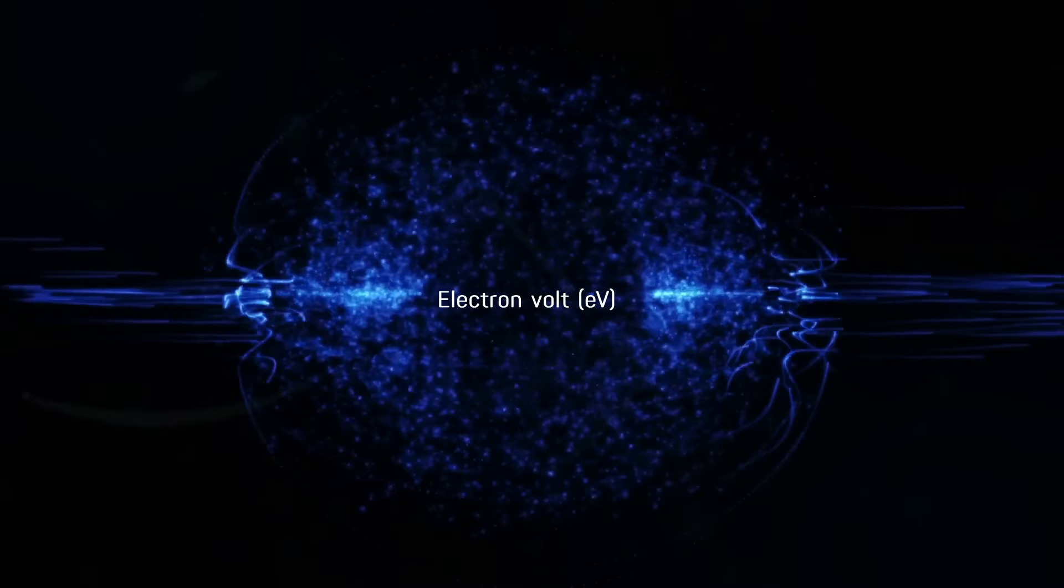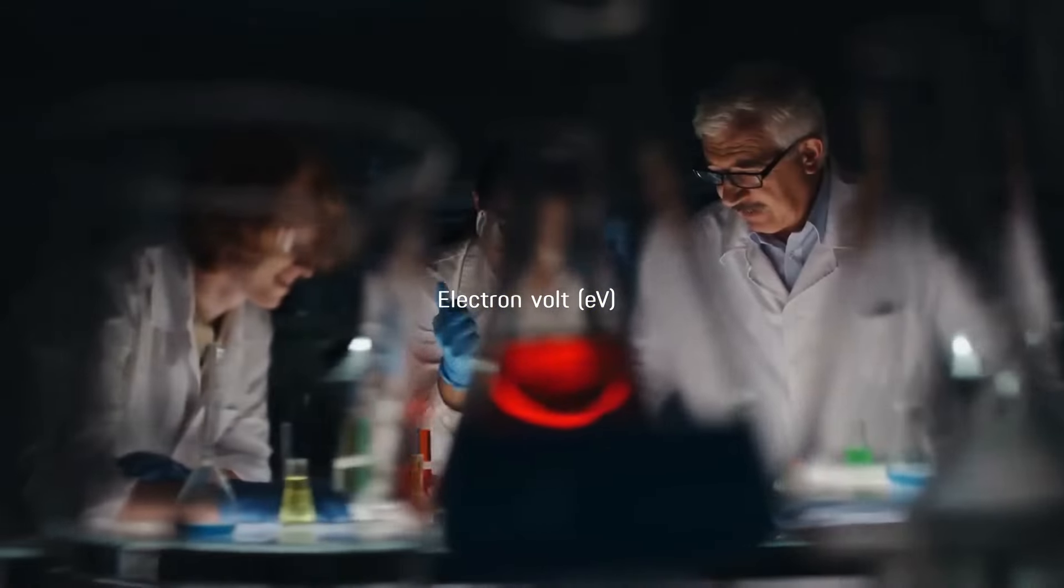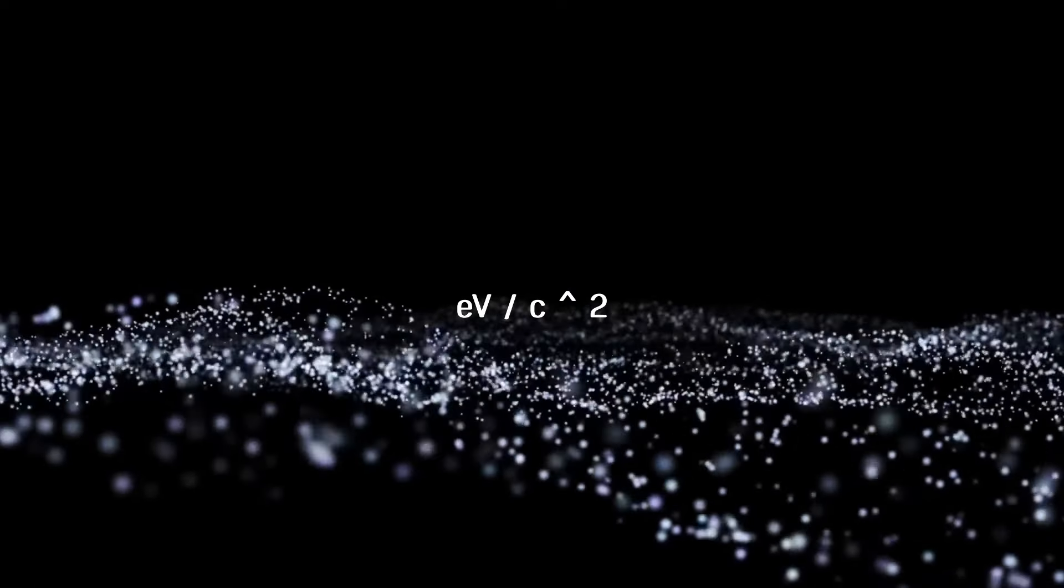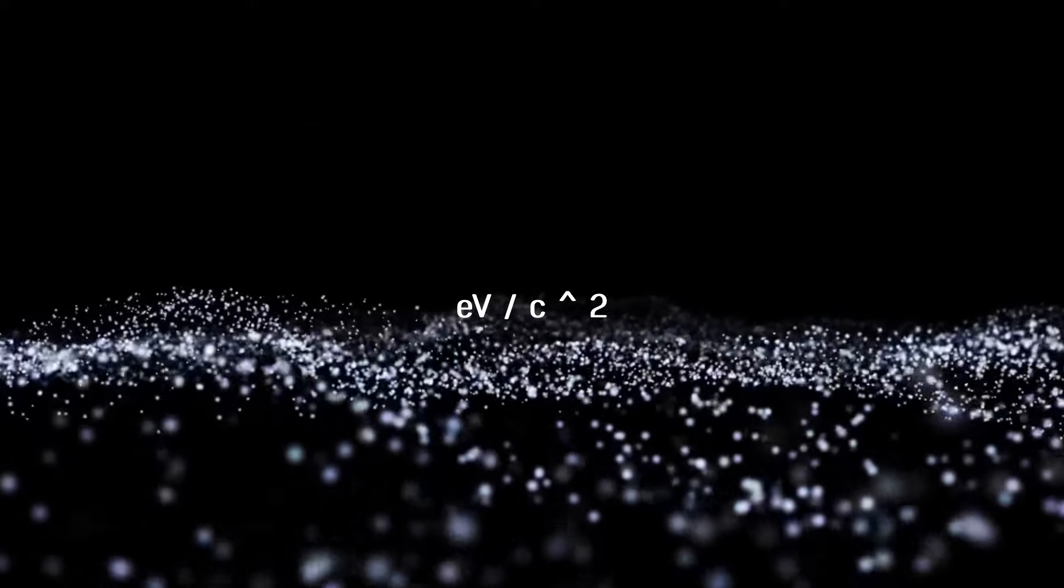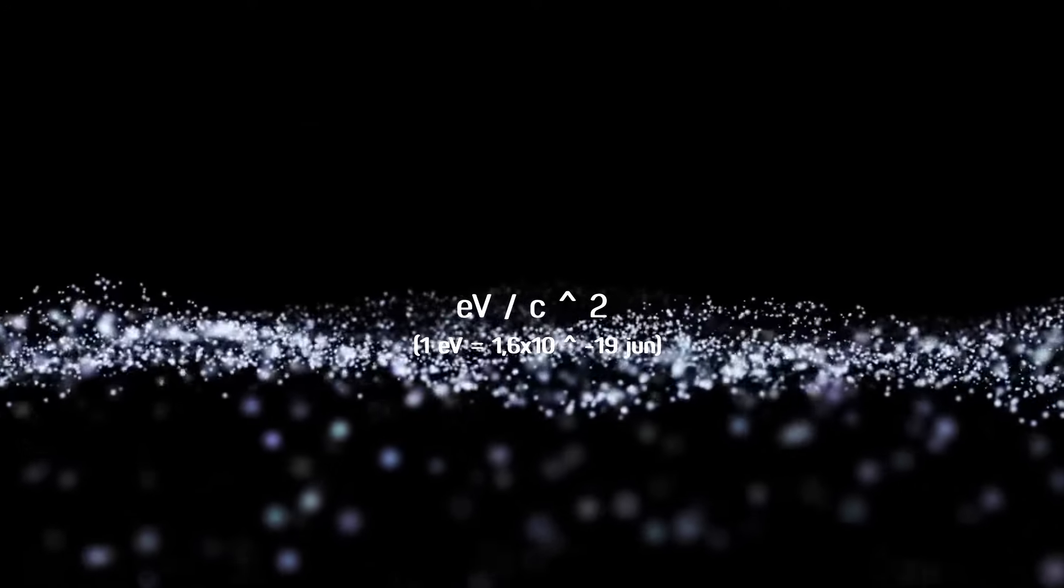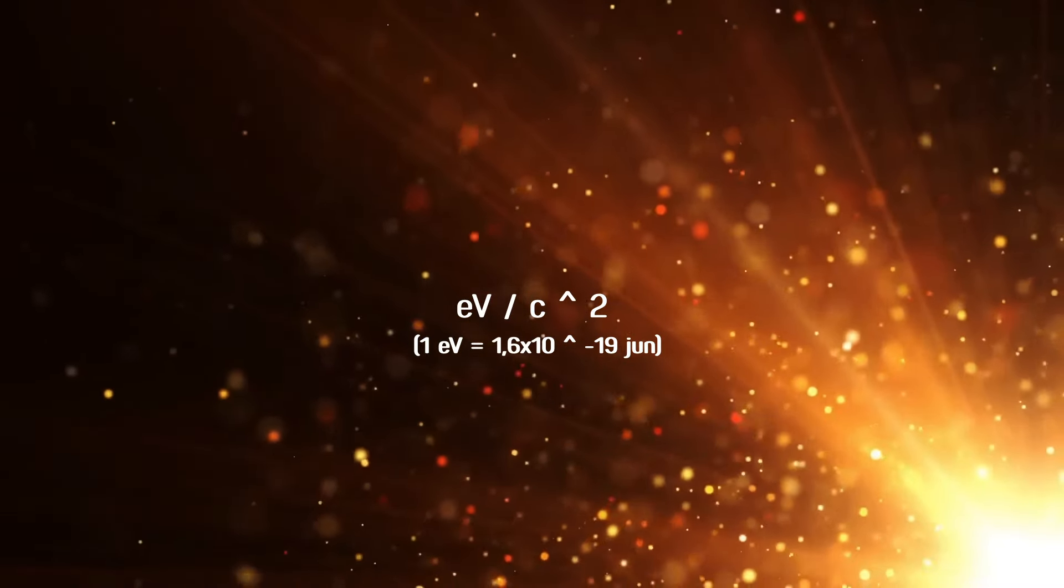Physicists use electron volts, eV, to measure the mass of subatomic particles. Technically, the unit is eV over c squared, where c is the speed of light. One electron volt is equivalent to about 1.6 times 10 to the power of negative 19 joules.